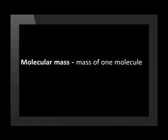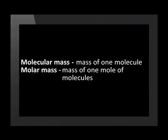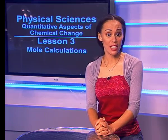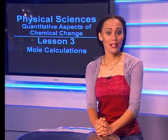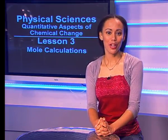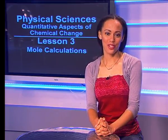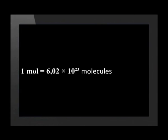Molecular mass is the mass of one molecule. Molar mass is the mass of one mole of molecules. We previously learned that the mole is a measure of the amount of a substance, just like one kilogram is equal to 1000 grams. One mole is equal to 6.02 × 10²³ molecules. Did you notice that the unit for the number of moles is written without the 'e'?